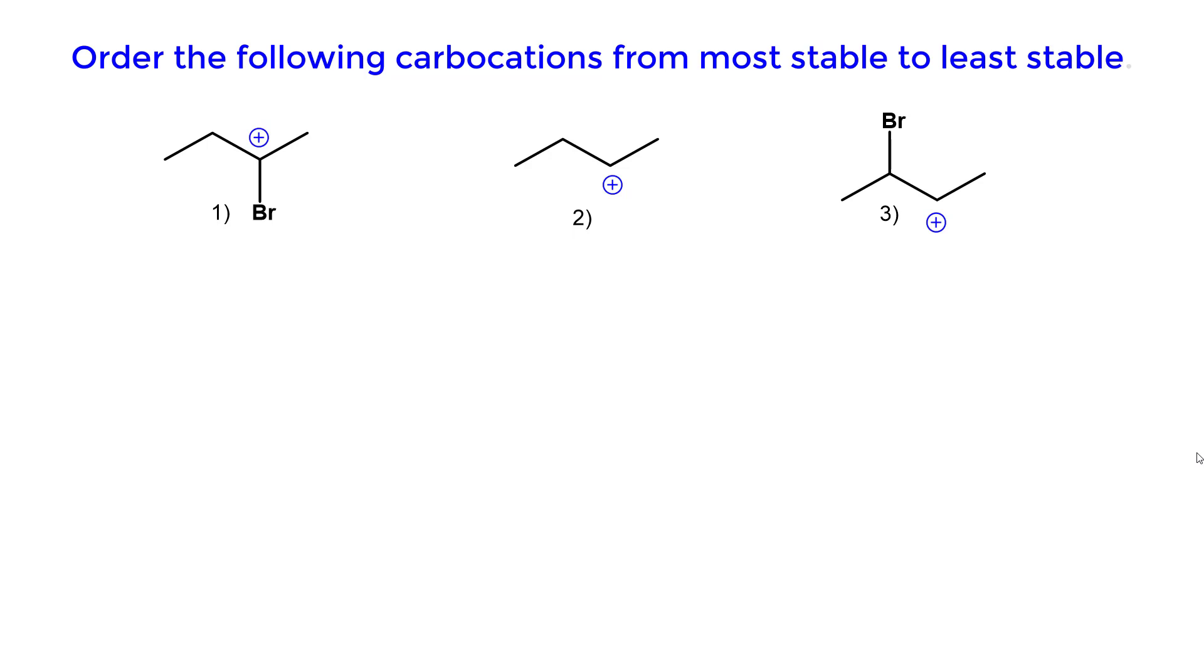First look at the differences between the carbocations. In structure number one, we can see that the carbocation is beside a bromine atom.